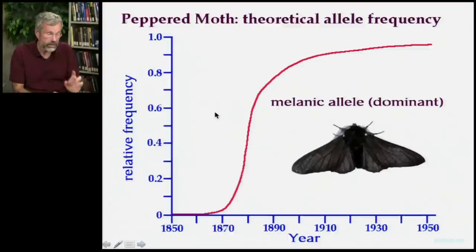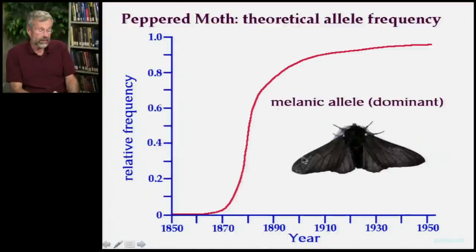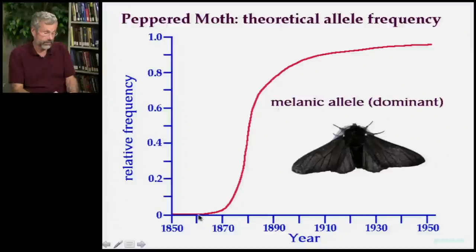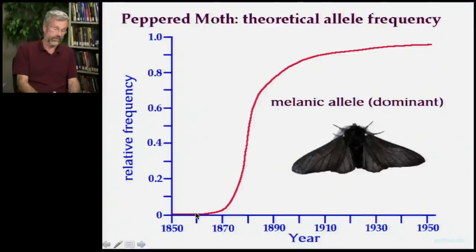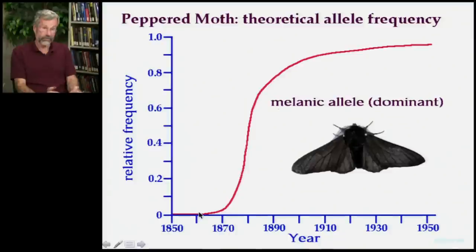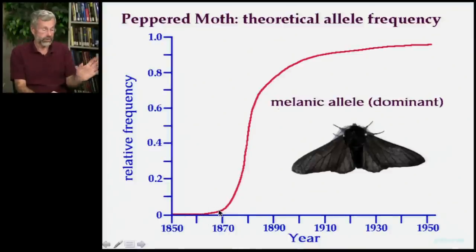The way it's reckoned is that this melanistic form was essentially just a rare, rare mutation, almost unknown in the 1850s and 1860s. But as the industrial age unfolded during the 1860s and 1870s, there was more and more soot.